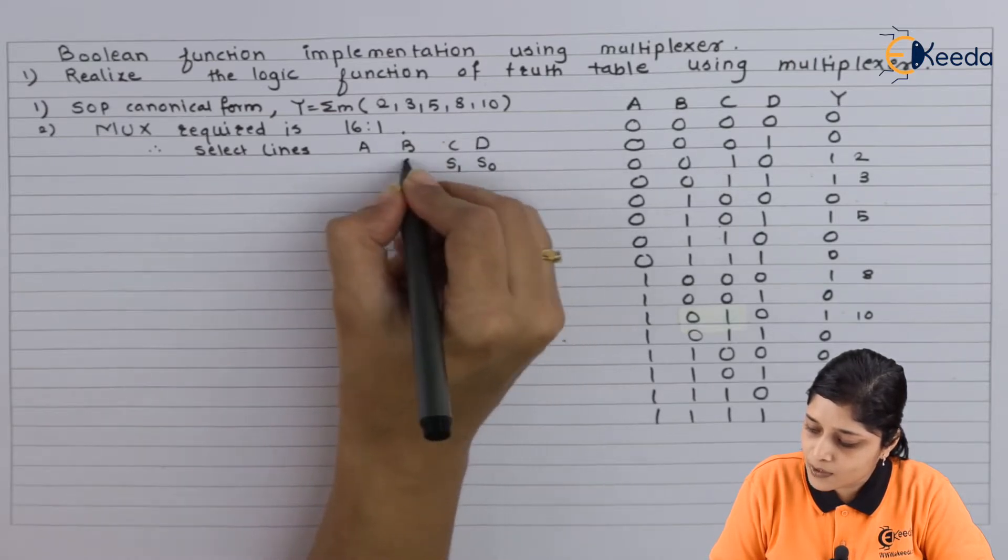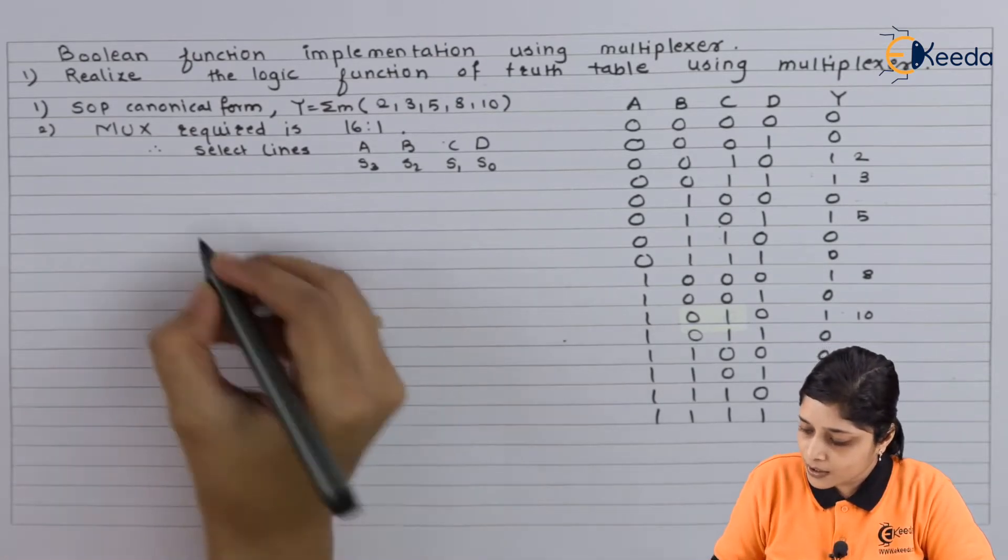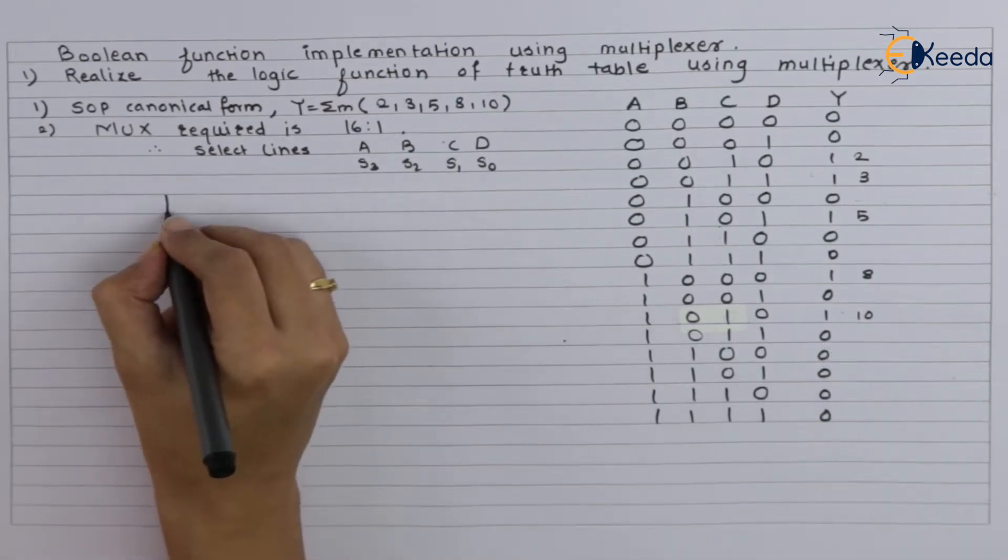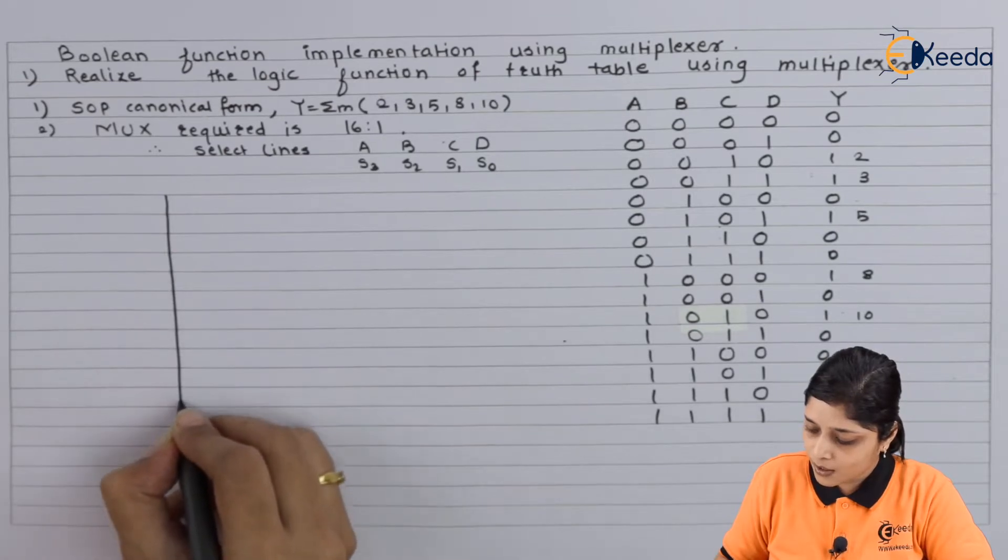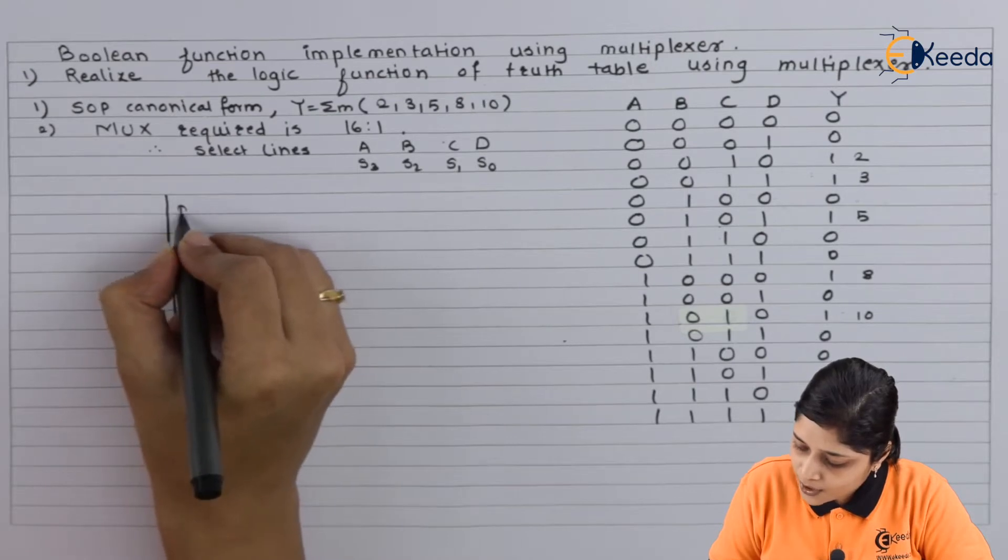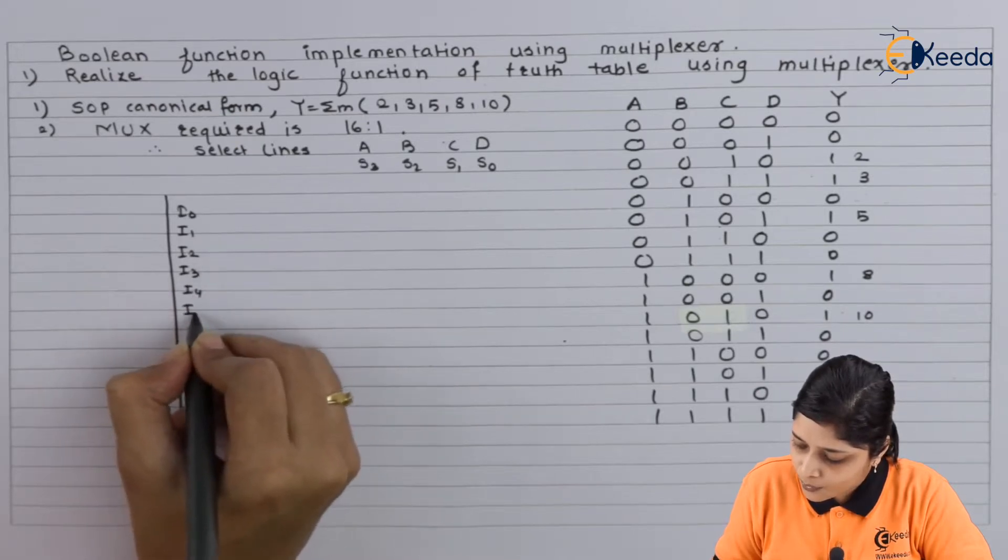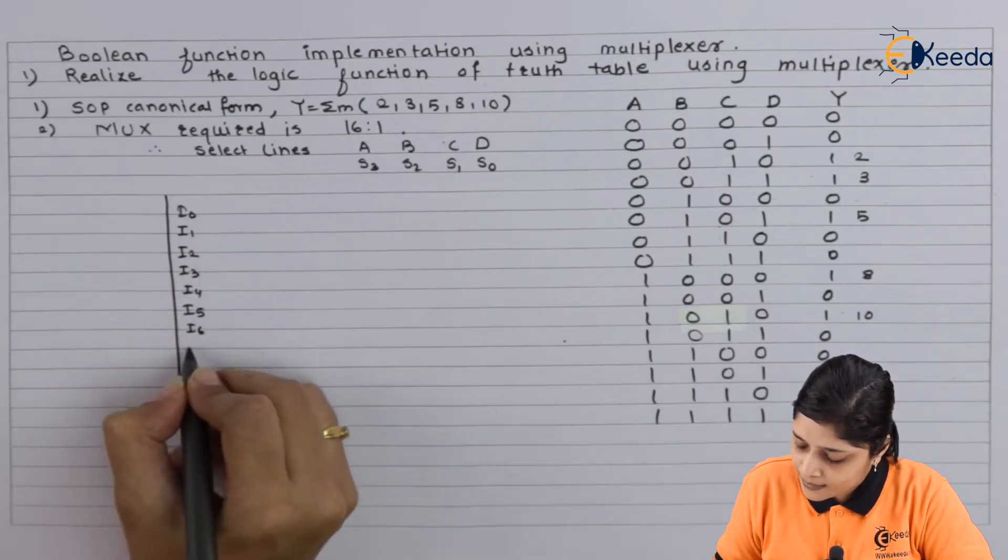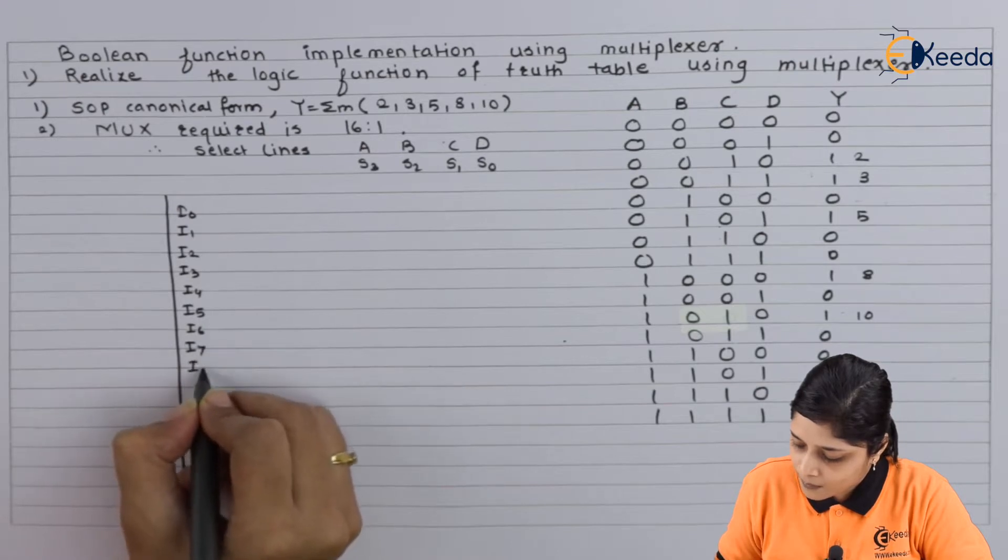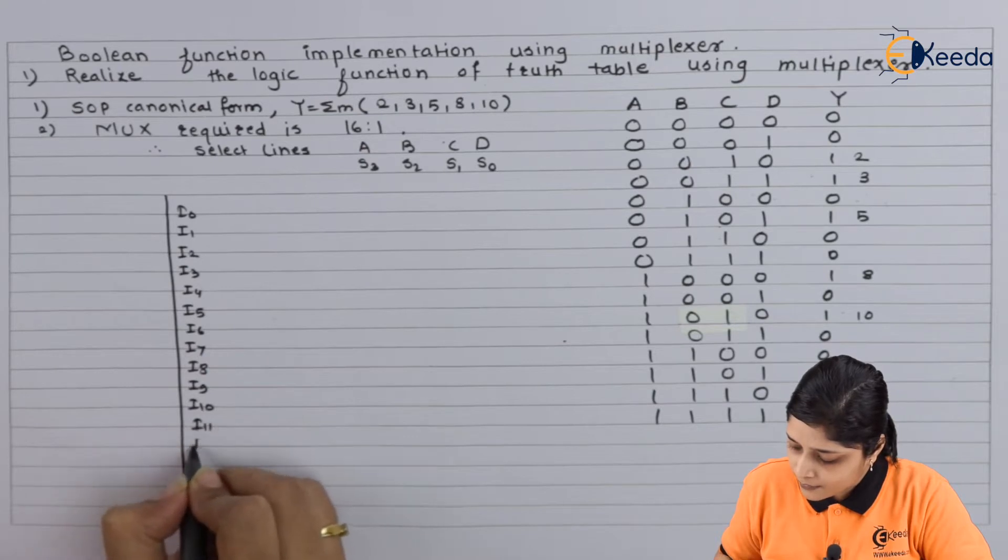Now we will draw the mux. So 16 input lines we have to show: I0, I1, I2, I3, I4, I5, I6, I7, I8, I9, I10, I11, I12, I13.